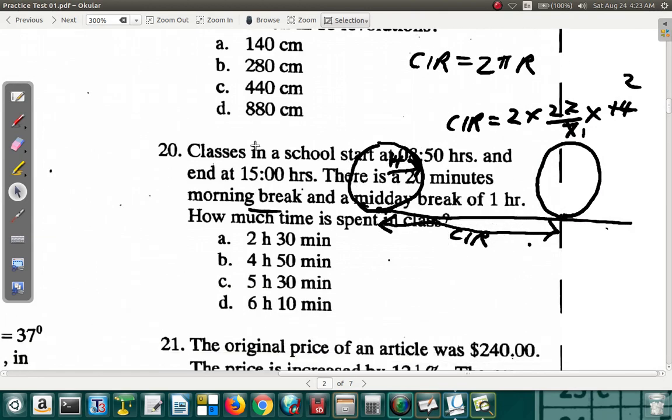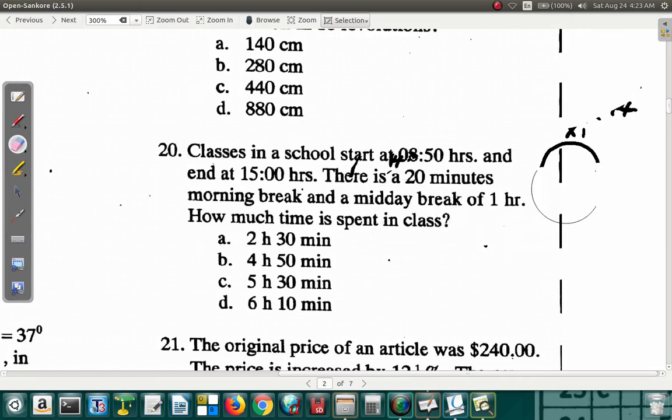Let's look at question 20. Let's erase these first. Question 20. It says, classes in a school starts at 08:50 hours. That's a 24 hour clock you're dealing with. And end at 1,500 hours. There is a 20 minute morning break and a midday break of 1 hour. How much time is spent in class?